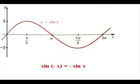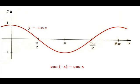First note that the graph of the sine function is symmetric with respect to the origin, which means that the function is odd. And the graph of the cosine function is symmetric with respect to the y-axis, which means the cosine function is even. So sine of negative x equals negative sine of x, and cosine of negative x equals cosine of x.